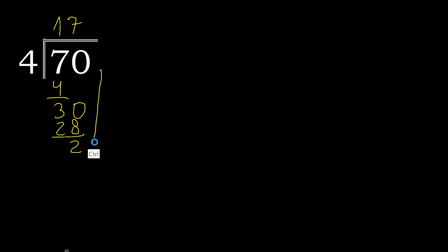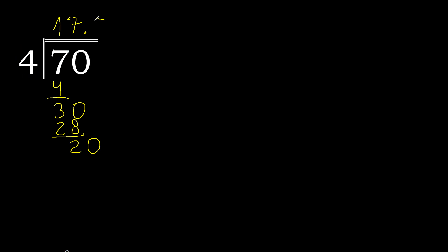Next: there is no more number, therefore we complete. Always complete with 0, here with a decimal point — 0 point. 4 multiplied by 5 is 20. Exact.